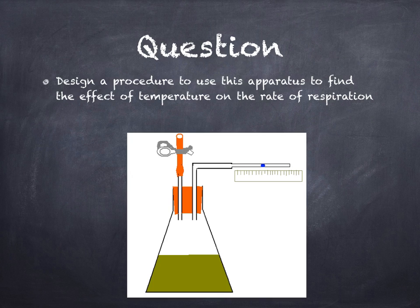Now if you're asked to design an experiment, it's important to think about the different points that you need to include. In this example, you're asked to design a procedure to use this apparatus to find the effect of temperature on the rate of respiration. So quickly sketch down this diagram so that you can refer to it as we go through the different points.